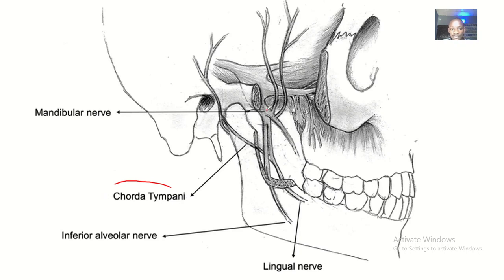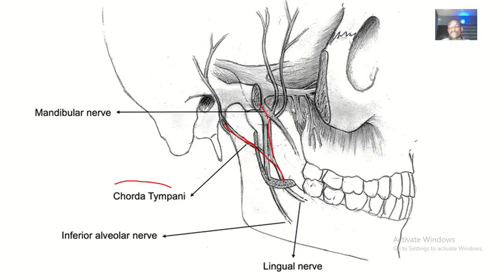In summary: the Chorda Tympani is a branch of the facial nerve. It is given off before the facial nerve exits the stylomastoid foramen. You can see the Chorda Tympani and the lingual nerve coming to merge in the image. The Chorda Tympani gives parasympathetic secretomotor supply to the submandibular and sublingual glands.